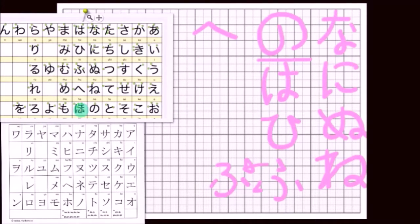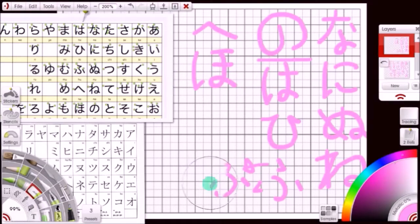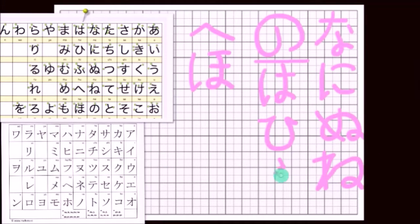And then you have ho, which is almost exactly the same as ha, except you add a little line to the top. So again: do curved line down with the hook, one line across, one line again, and the loop at the very bottom.